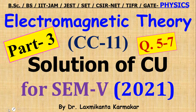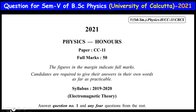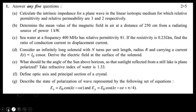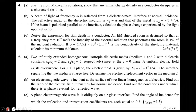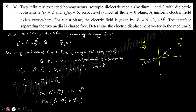So let's start today's questions five to seven. You can see this is the total question paper — questions one, two, three, four are already covered in parts one and two. In this section we want to cover question numbers five, six, and seven. Question number five says: two infinitely extended homogeneous isotropic dielectric media, with dielectric constants epsilon one and epsilon two equal to five, meet at the plane z equals zero.